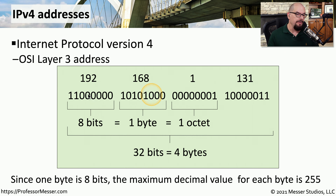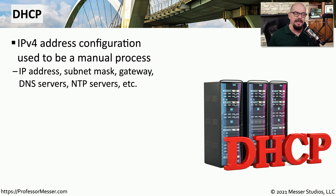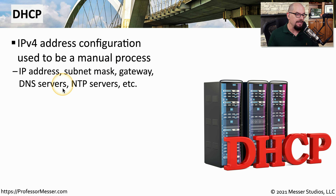From binary math, we know this combination of 1s and 0s could be all 0s or all 1s. If we set all of those bits to 1 and convert back to decimal, the maximum value in any one of these groups is always 255. If you're just getting into IP addressing, you may realize there's an entire set of addresses on your computer you've never had to manually configure. Looking at the IP configuration on your computer, you may see addresses automatically assigned — an IP address, a subnet mask, a gateway, a DNS server, an NTP server, and perhaps other settings as well.